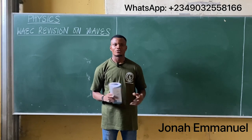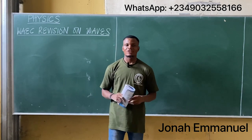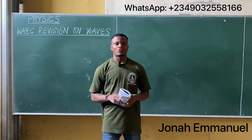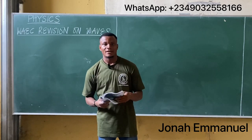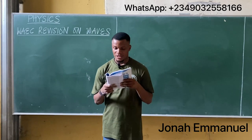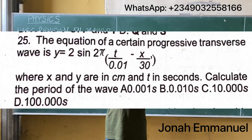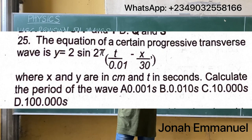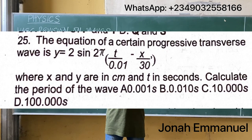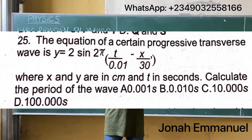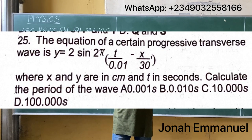Hello and welcome to today's class. We're revising some past questions on waves. This particular question — question 25 — says: the equation of a certain progressive transverse wave is y = 2 sin(2π(t/0.01 − x/30)), where x and y are in centimeters and t in seconds. Calculate the period of the wave.